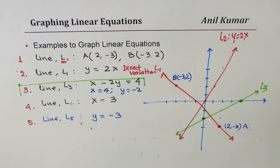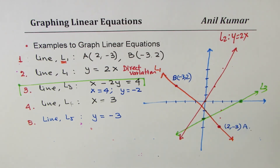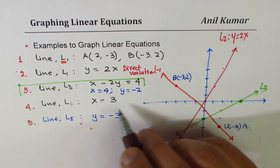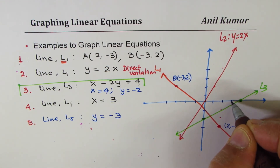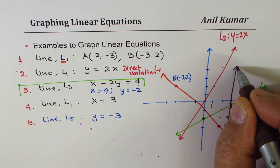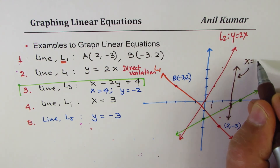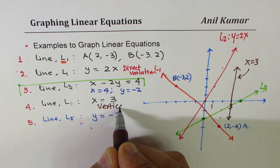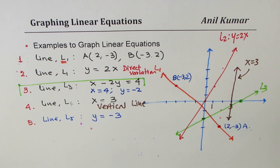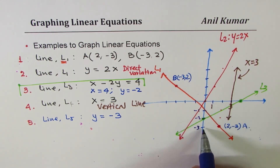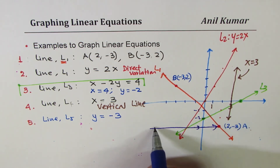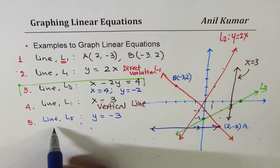The last two are special lines — horizontal and vertical. x equals 3 means for all values, x is always 3, so it is a vertical line where every point has x-coordinate 3. y equals minus 3 means y is always minus 3, which is a horizontal line going through the y-intercept at minus 3.